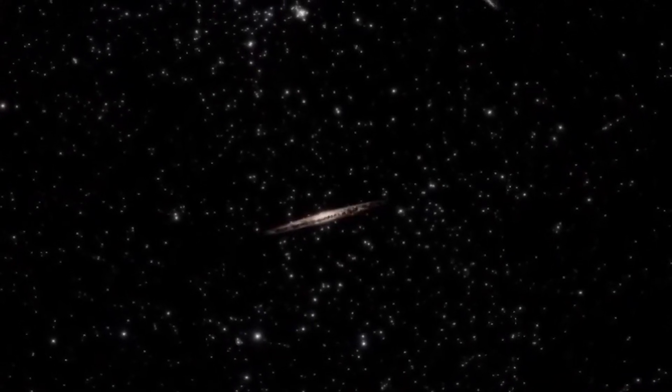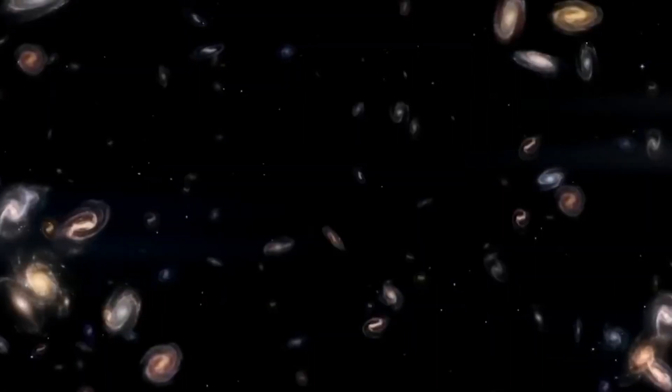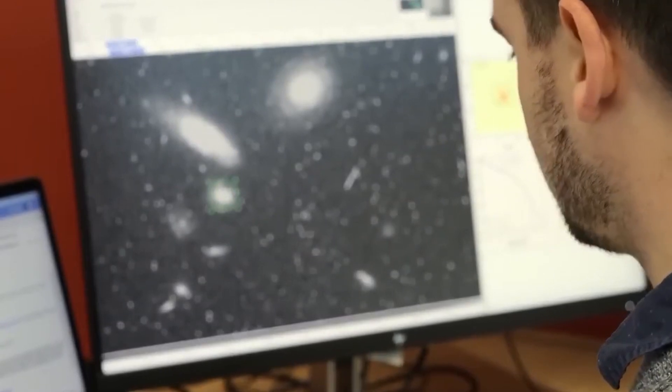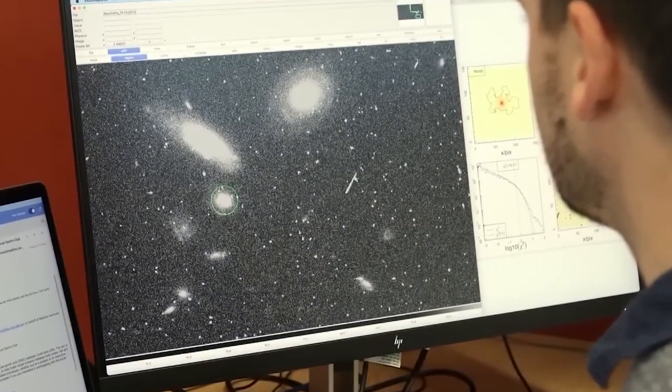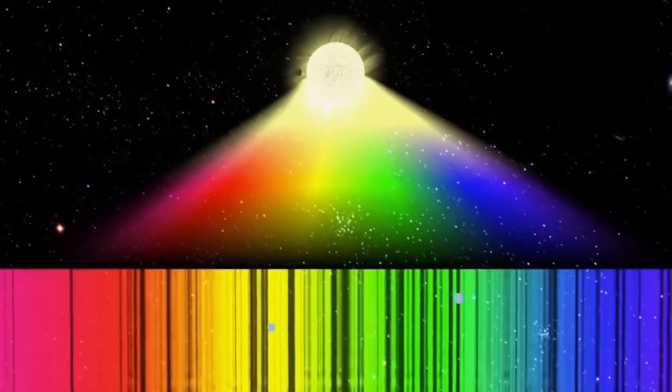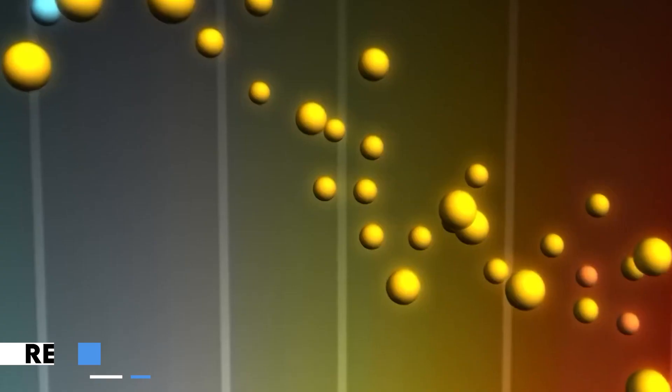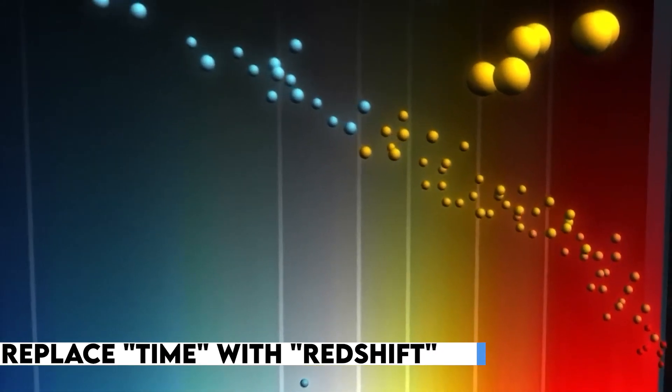You know what? The earlier a galaxy forms, the further back in time it exists and the more distant it is from us today. And the further away it is, the faster it zooms away from us. This rapid movement causes a phenomenon called redshift. It's so reliable that astronomers often replace time with redshift. Fascinating, isn't it?